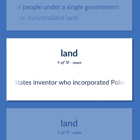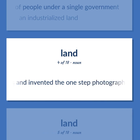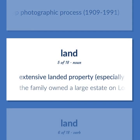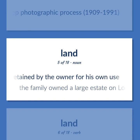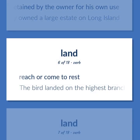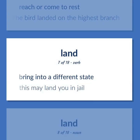United States inventor who incorporated Polaroid film into lenses and invented the one-step photographic process, 1909–1991. Extensive landed property, especially in the country, retained by the owner for his own use — 'The family owned a large estate on Long Island.' Reach or come to rest — 'The bird landed on the highest branch.' Bring into a different state — 'This may land you in jail.'